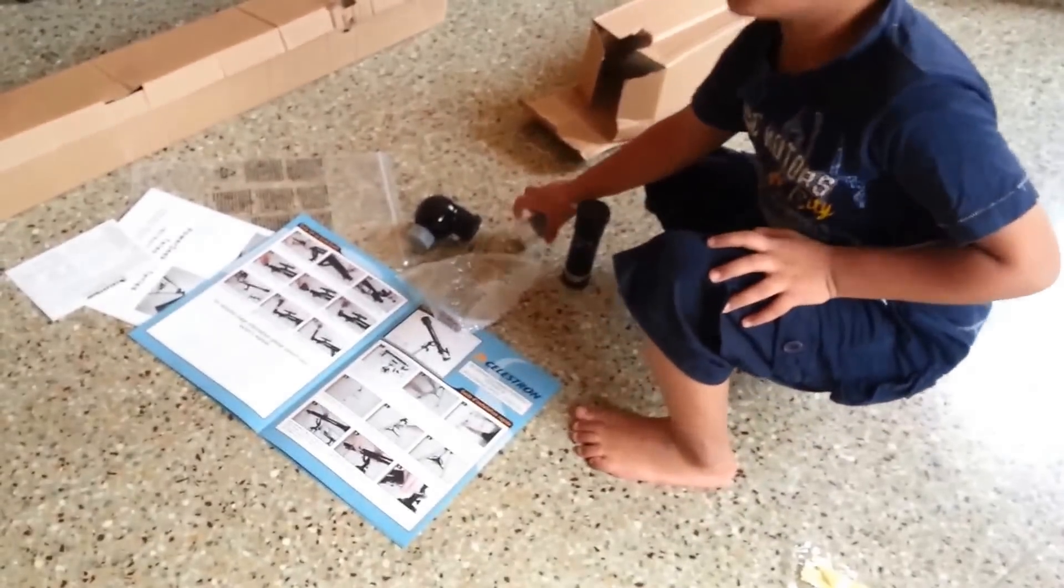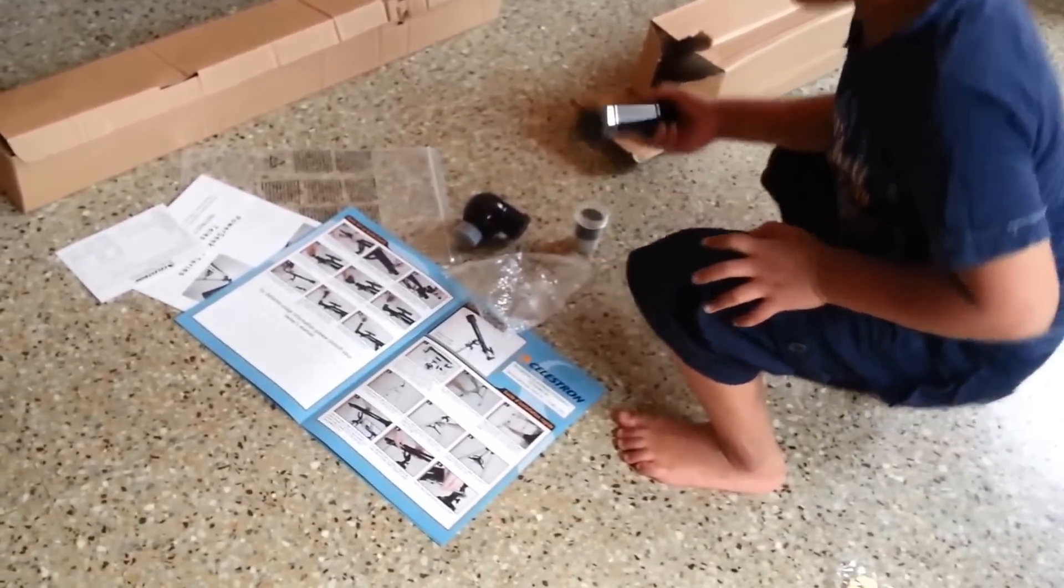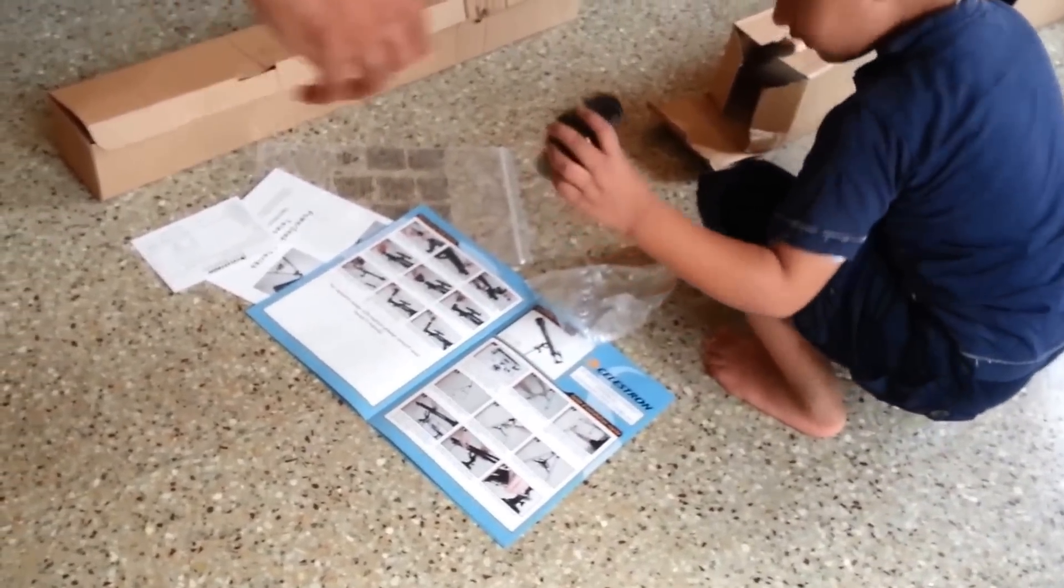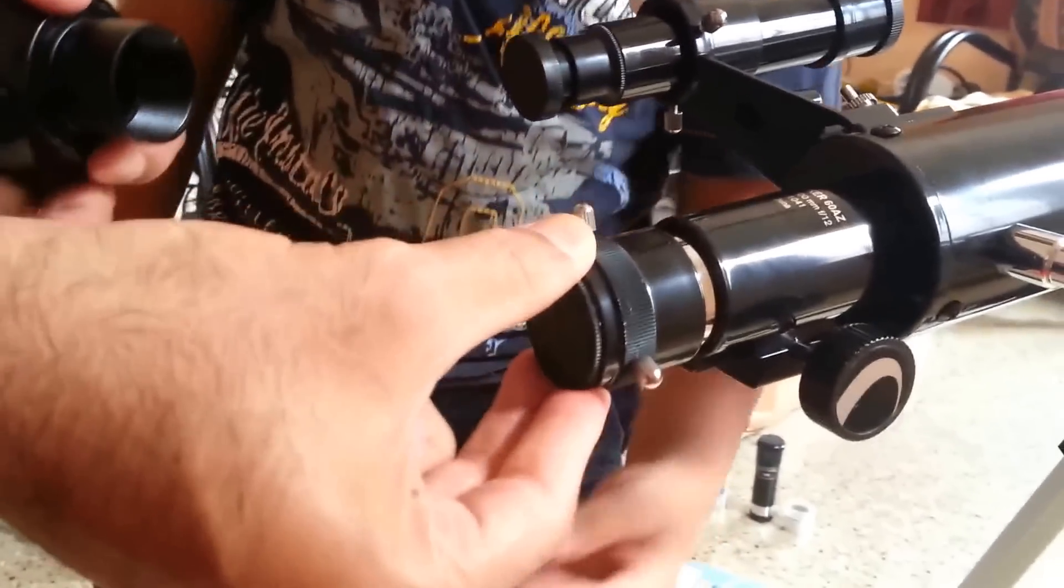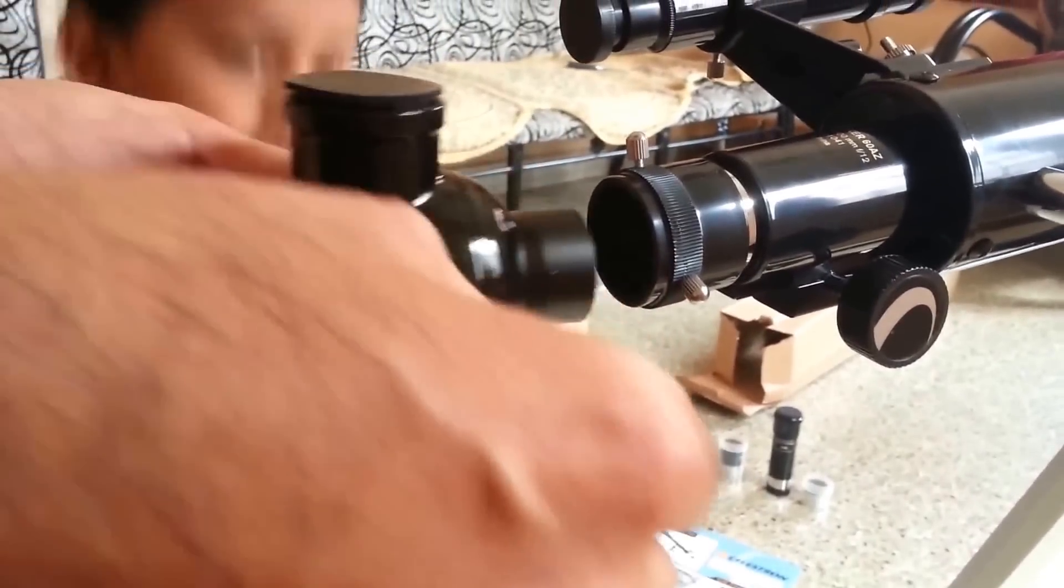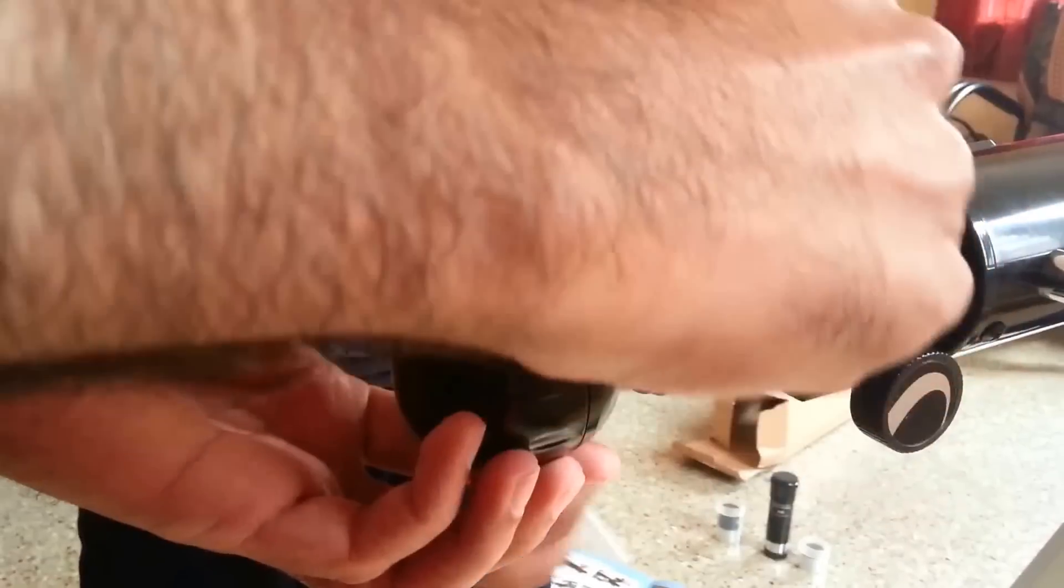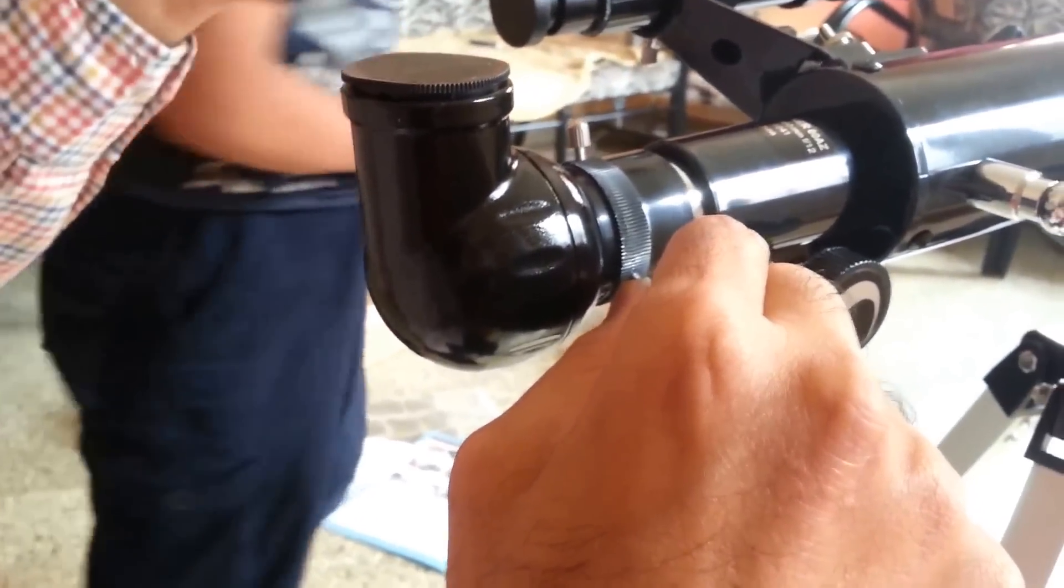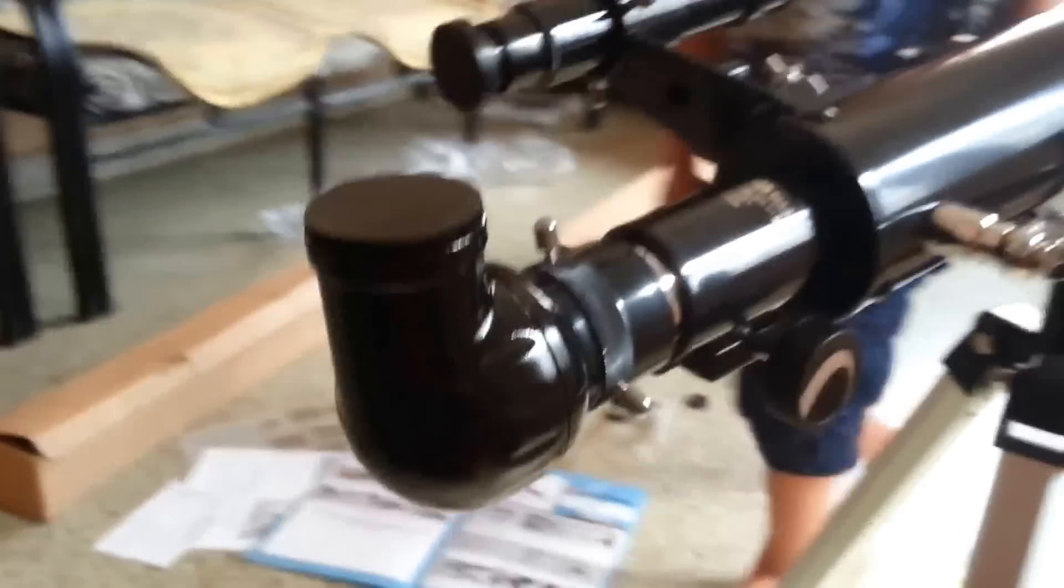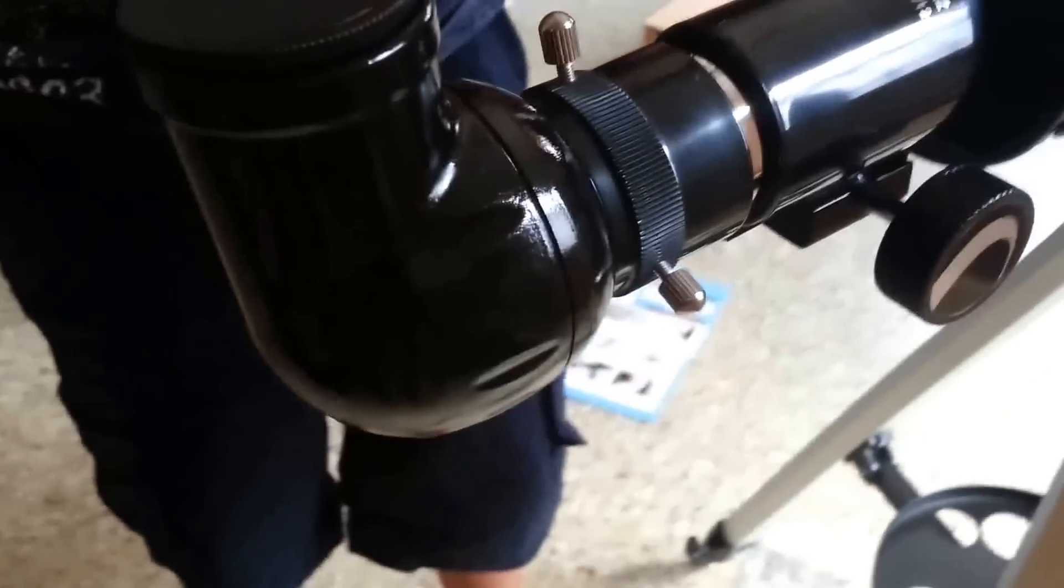Now we will take the star diagonal. Can you take that star diagonal? I am going to fix it here. There is a cap here. You can remove the cap. So now I am going to fix the star diagonal. Just unscrew the two. Now you can see that the star diagonal is fixed.